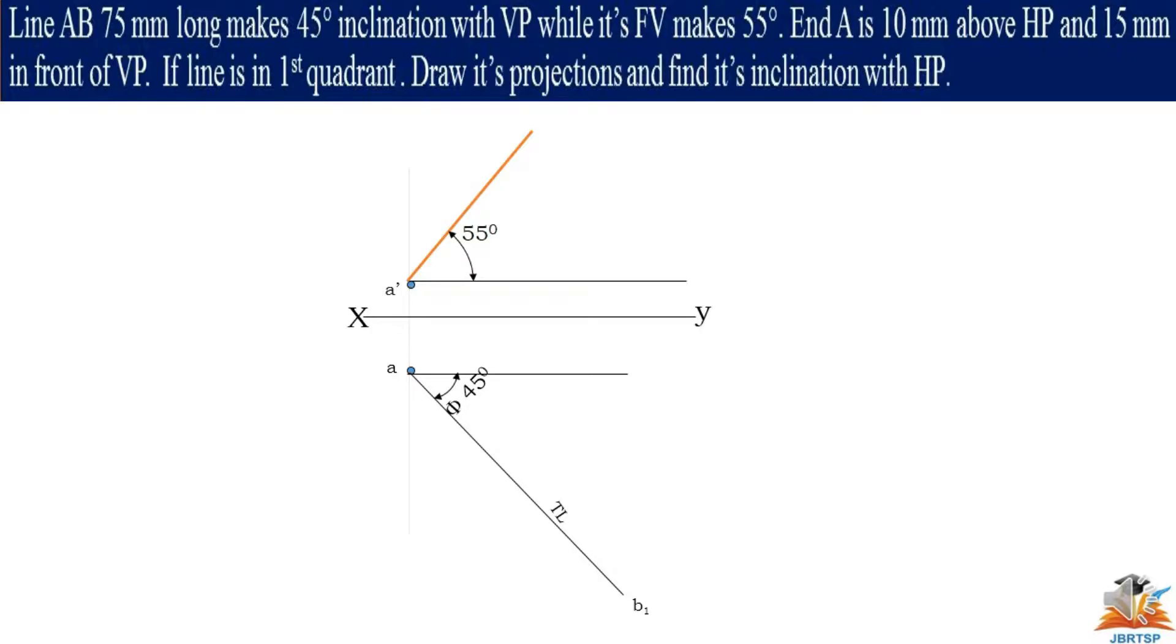Now the next step is draw the locus and draw the vertical line up to the locus of A dash. And draw the arc. From A dash as center, you can get one end point. This end point is front view's end point. You can get the locus like this. This is B dash. This is the front view.